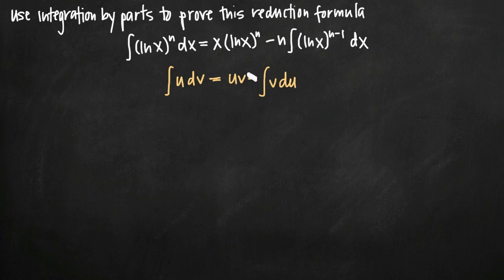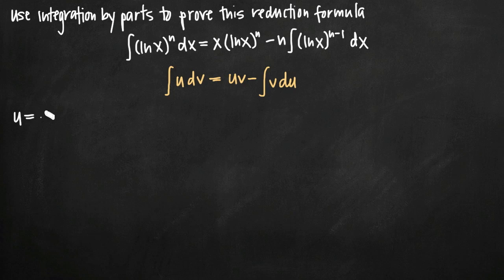I've also written the integration by parts formula here so we can use it as a reference. What we're going to do is apply integration by parts to the left-hand side and come up with what's on the right-hand side. For integration by parts, we need to identify values for u and dv. In this case, u is going to be the quantity ln of x raised to the n — remember n is a constant — and dv will equal dx.